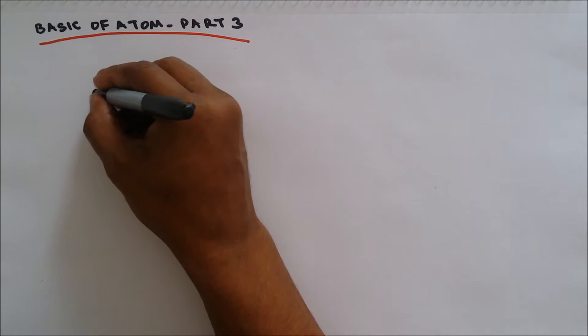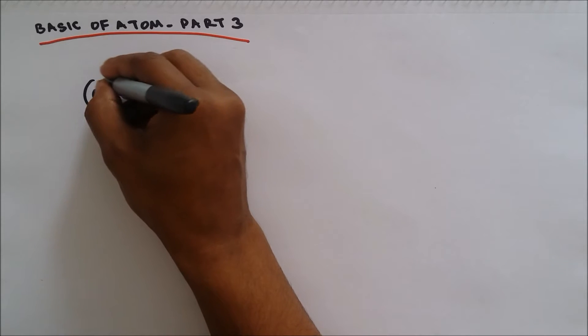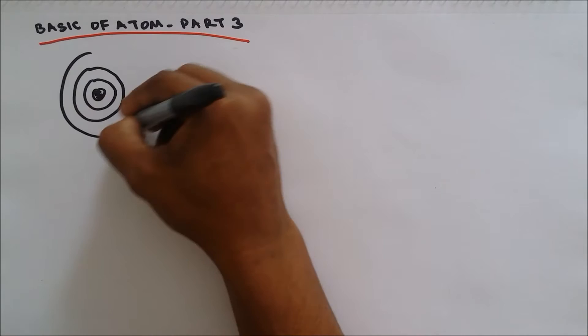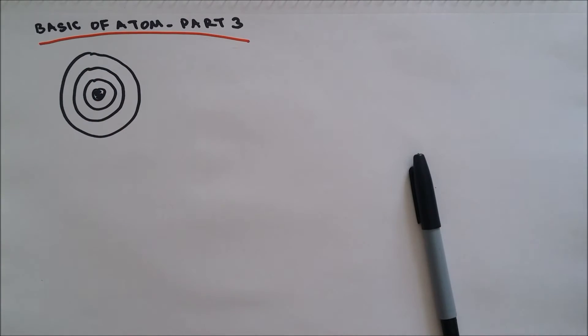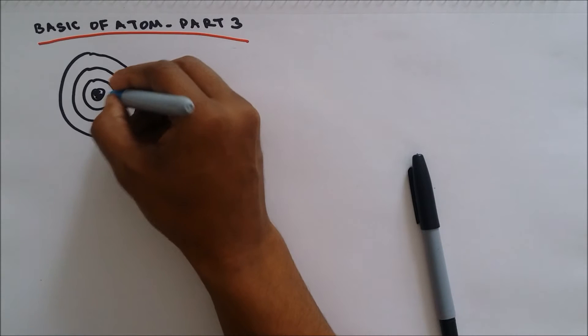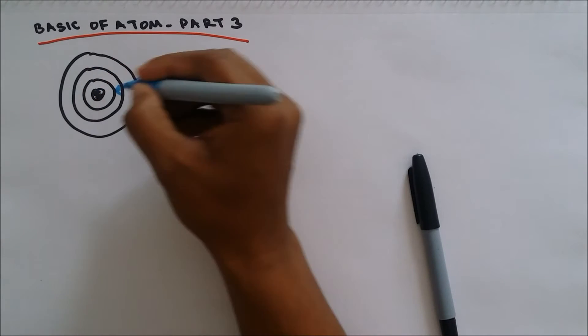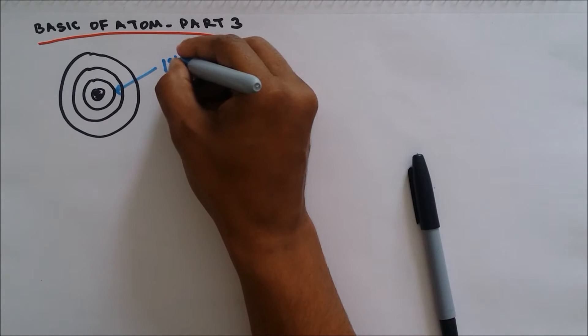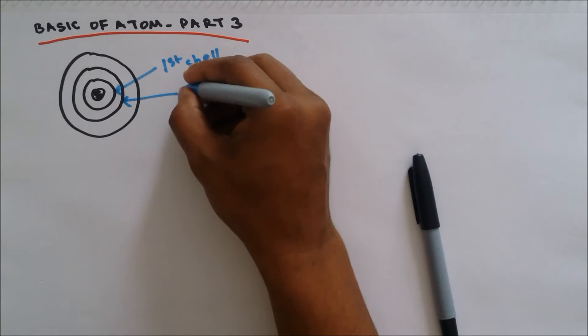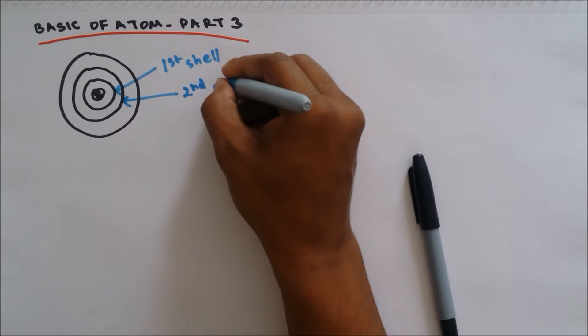If you take an atom, you will have first shell, second shell, and third shell. The shell which is closest to the nucleus is called first shell, and then this is the second shell.